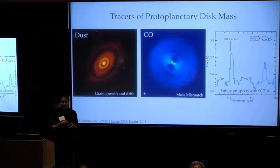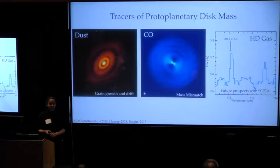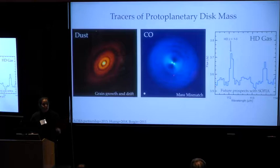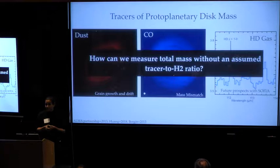You can also trace total gas mass in disks by measuring HD emission. So this probes the warm gas in disks and is a hydrogen molecule line. However, without Herschel, these measurements are not possible, although there are future prospects of doing this for some of the brightest disks with SOFIA. However, the question remains, how can we measure the total gas disk mass without an assumed tracer-to-H2 ratio?